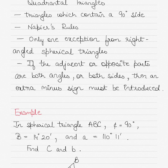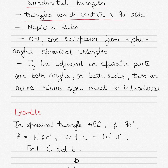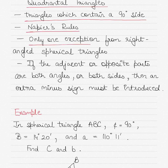Today's topic is solving the Quadrant Triangles in Spherical Trigonometry. Quadrant Triangles are spherical triangles which contain a 90-degree side — not a 90-degree angle, but a side whose value is 90 degrees. They are solved using Napier's rules and have only one exception from right-angled spherical triangles where an angle is 90 degrees.